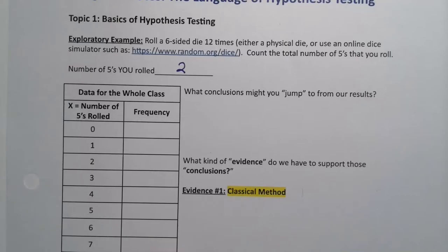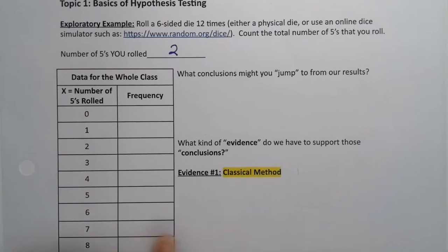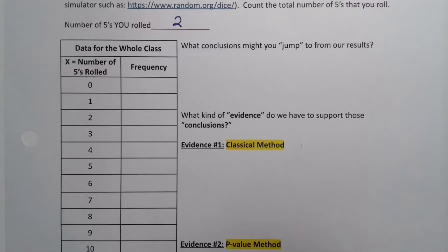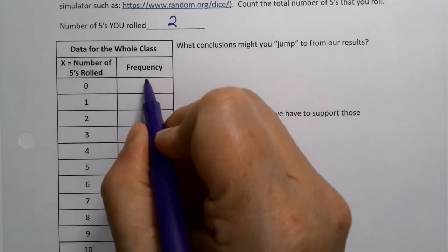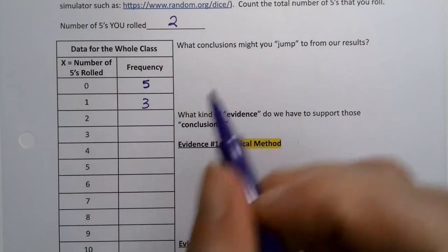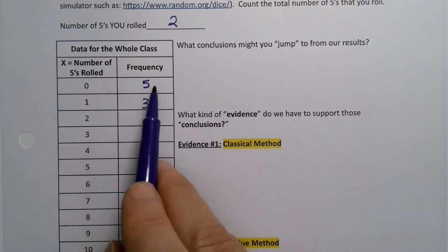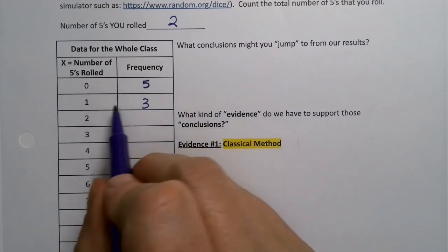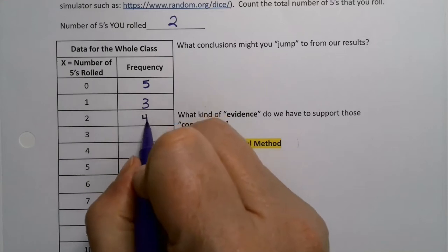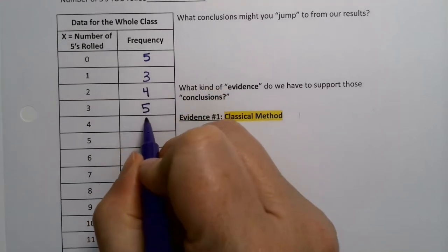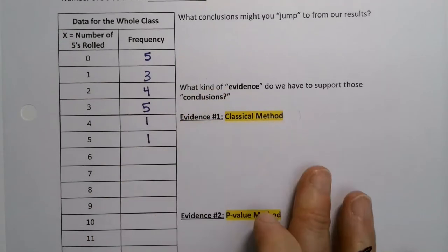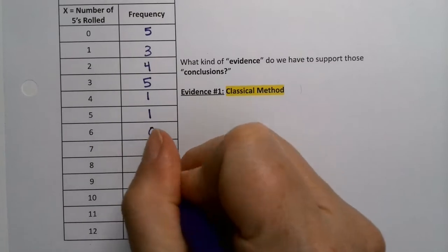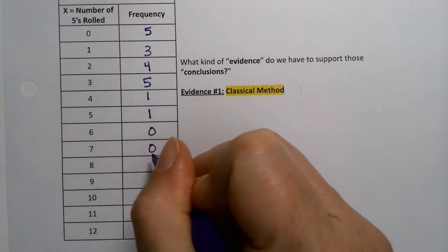So you can see we could do this over and over. And in a class, we have everybody do it. I did have a class do it, and these are the results they came up with. So it was 5 that had no fives at all. So 5 different rolls had nothing, no fives. 3 different times had 1 five. Yes, these are real results. This was a real class from the winter of 2020, as a matter of fact.